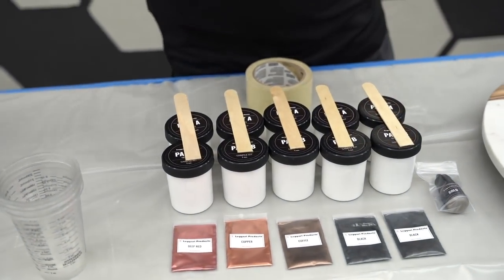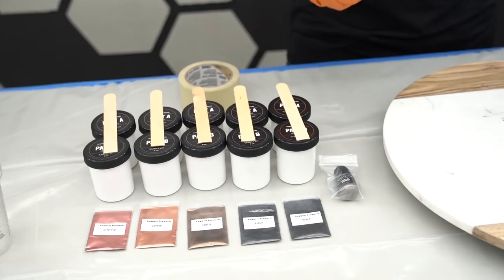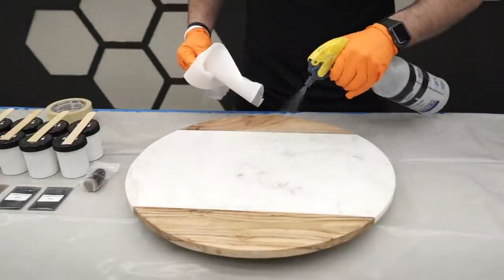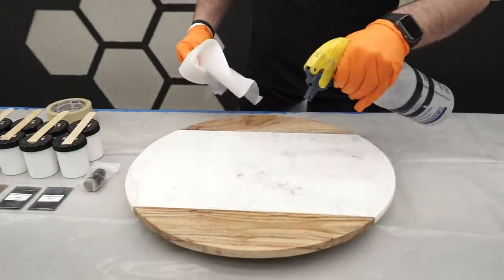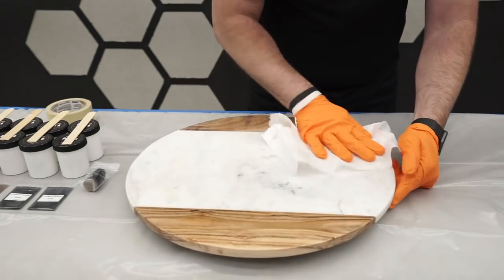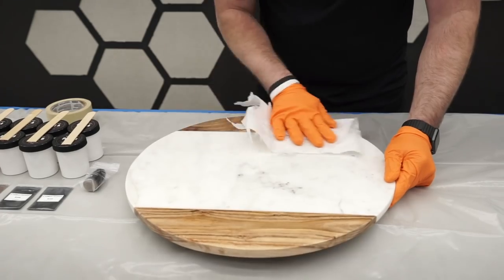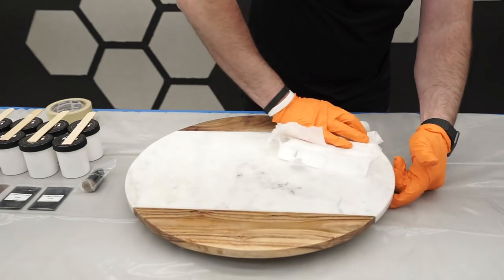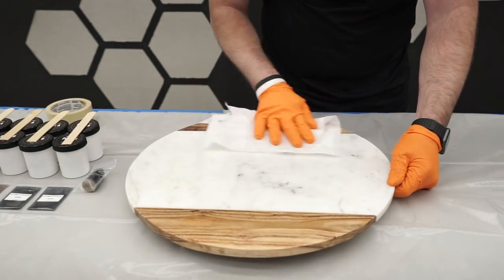So first thing we want to do, now you guys can sand these, obviously sanding is going to be better to remove anything off but I'm just going to do a denatured alcohol wipe, get it really clean, tape my edges, mix up the sample kit and then pour the stuff out. So we want to just clean this really good and usually it has like either a sealer or some kind of lacquer on it and this will kind of make it tacky.